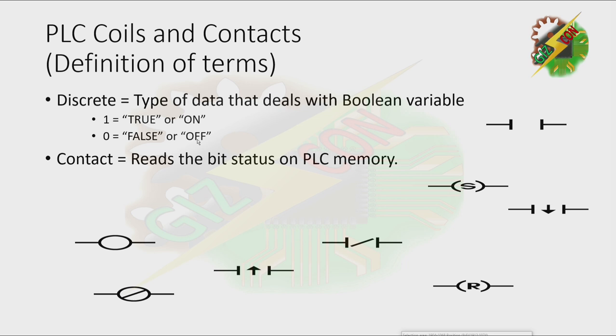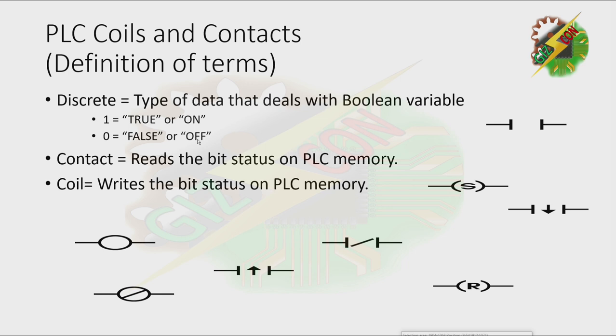We have contact — it reads the bit's status on the PLC memory. And we have the coil — it writes the bit's status on the PLC memory.